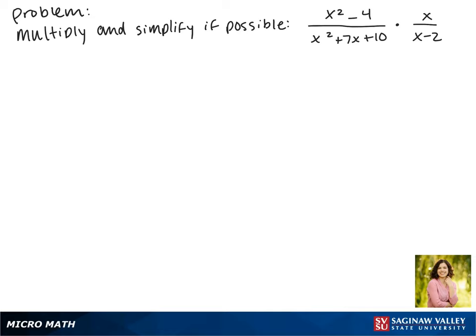Today we'll be multiplying and simplifying, if possible, the expression x squared minus 4 over x squared plus 7x plus 10 times x over x minus 2.